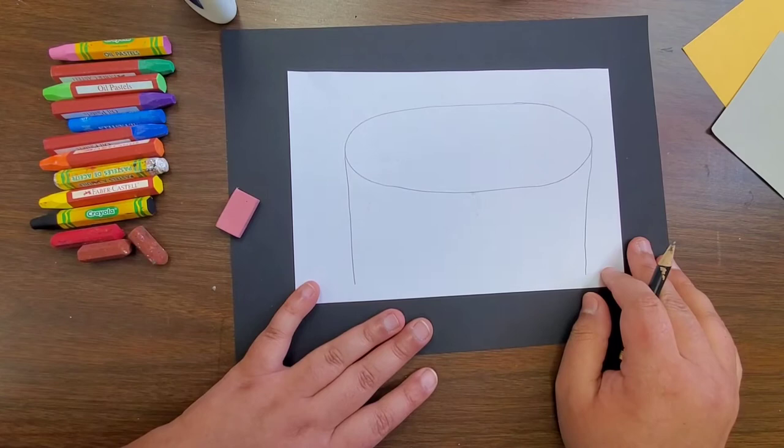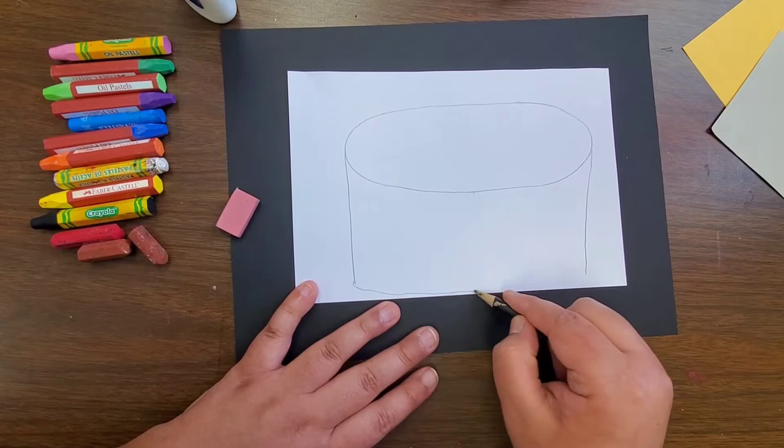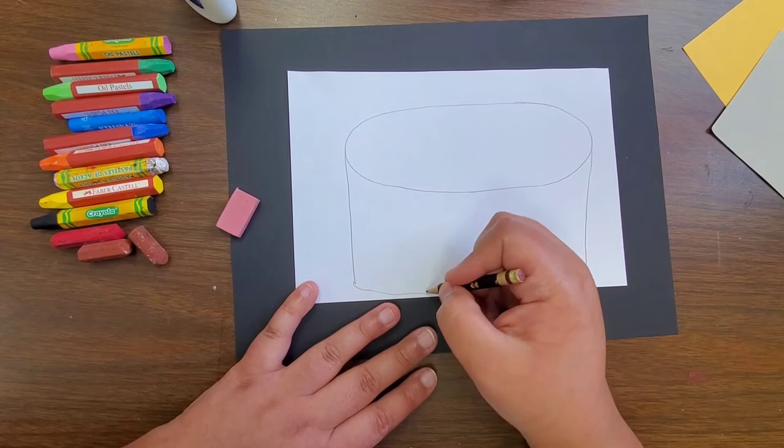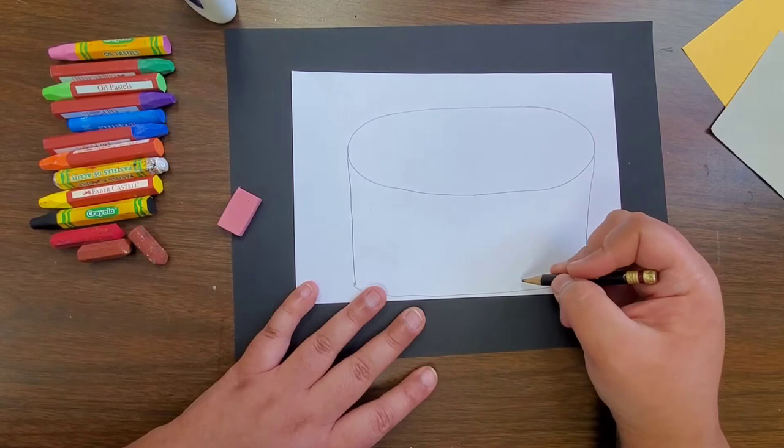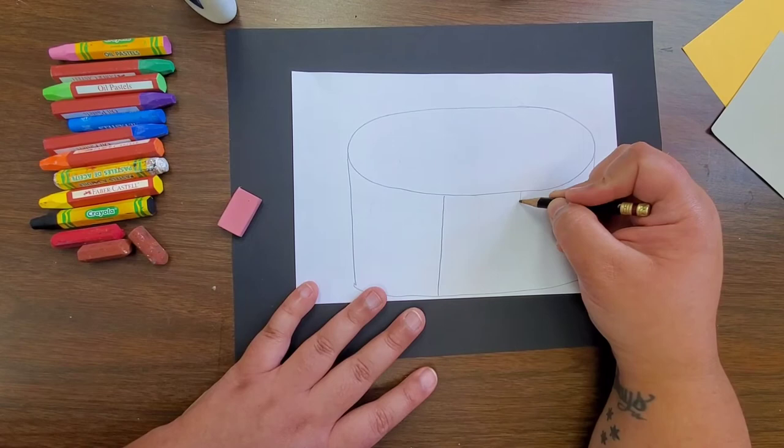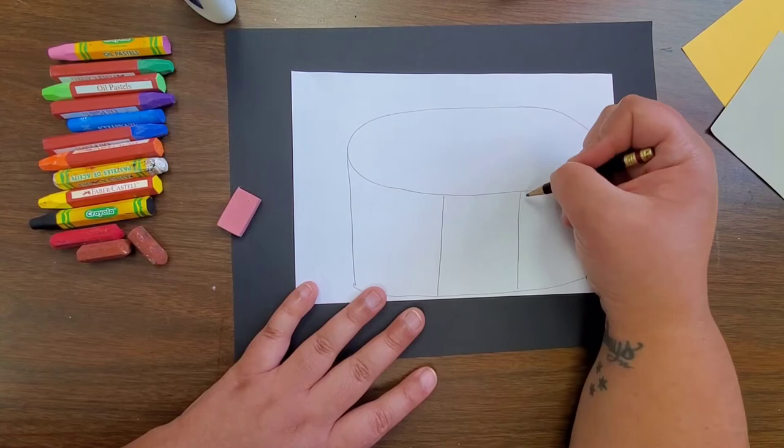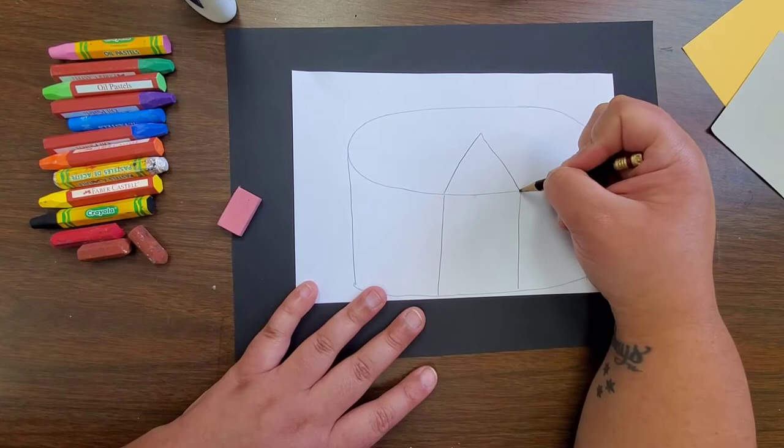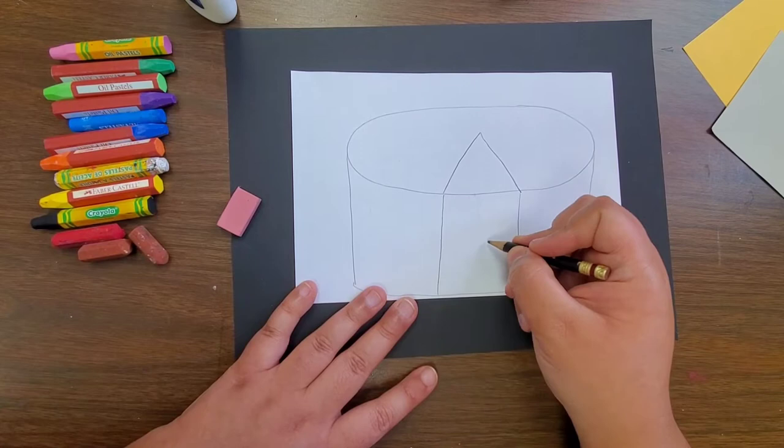I'm just drawing two lines here on the side and then I will be using a curved line down at the bottom to connect my bottom line. Then what I'm going to do is I'm going to draw two parallel lines right here in the middle. This is where a slice is going to be. Then I'm going to draw a triangle, almost like I'm drawing a house.